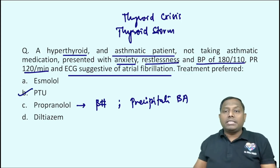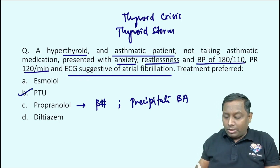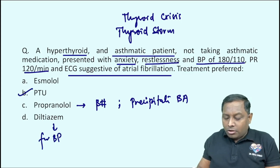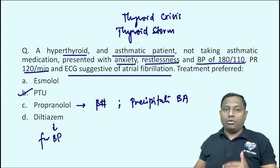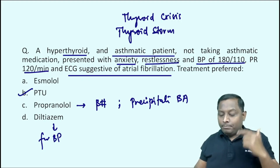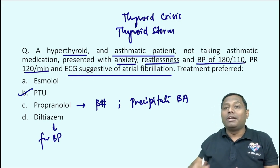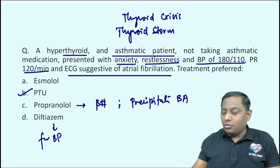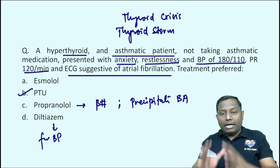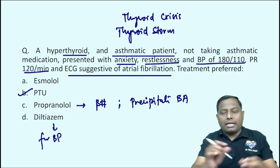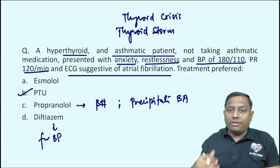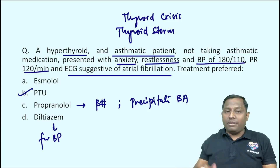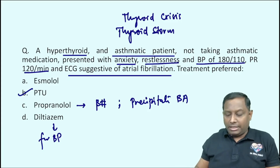Many sources may give diltiazem as an answer — diltiazem can be given undoubtedly; it will tackle the blood pressure. Since propranolol cannot be given, we can give diltiazem or esmolol. However, esmolol is also a beta blocker — although cardioselective, it still has the propensity to precipitate bronchial asthma. So after looking at multiple references, the best answer is PTU for a question like this.